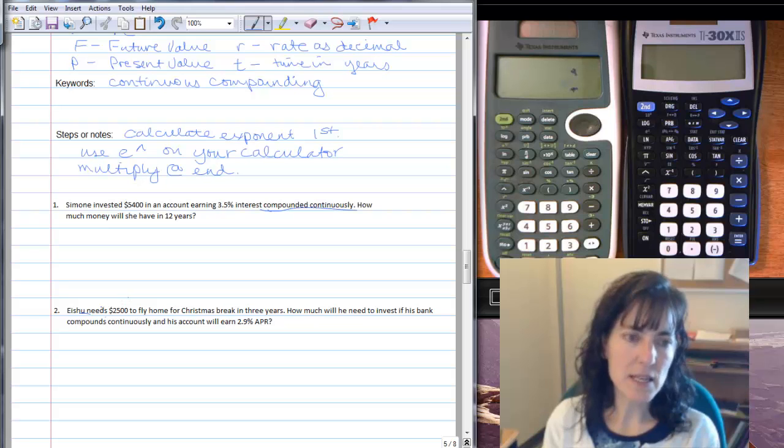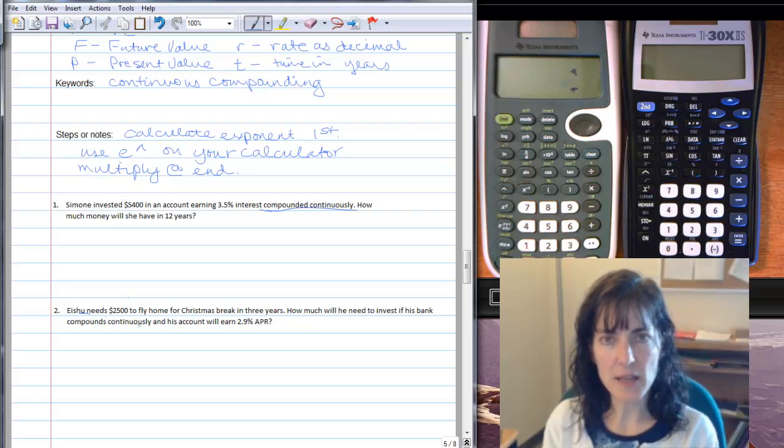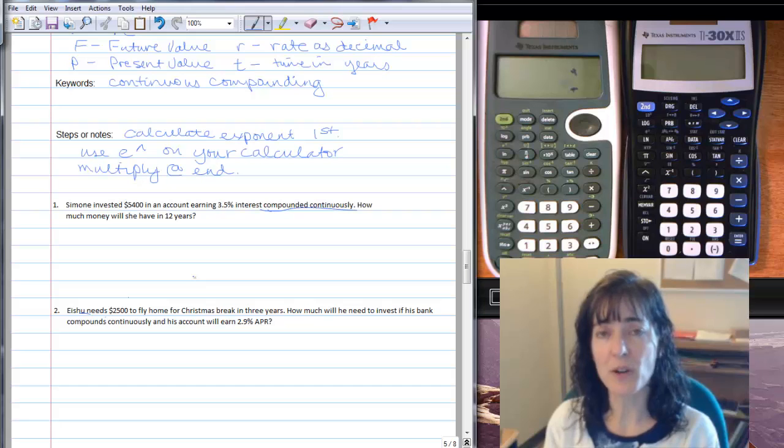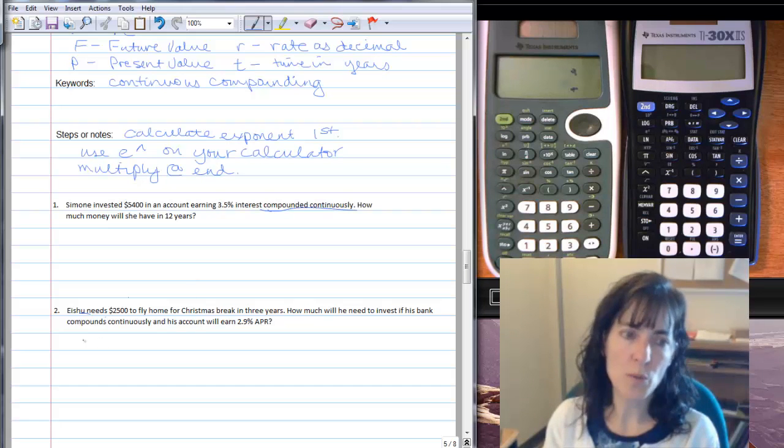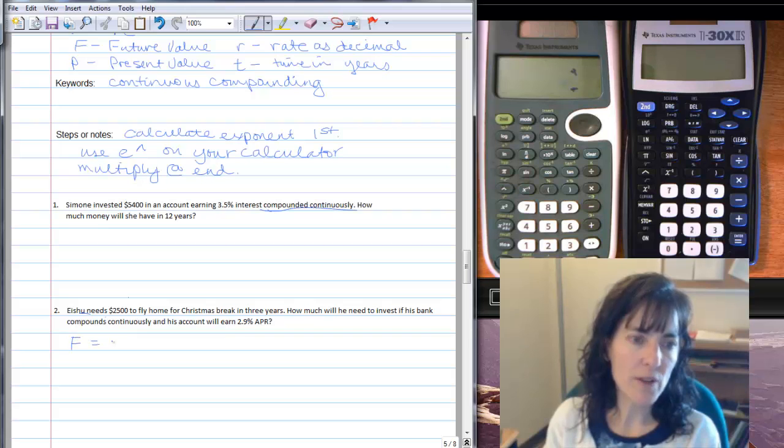Well, since this problem two is asking us to find the present value because they're giving us what Eshoo needs in the future, I'll show you that one so that you'll be able to see that direction on this problem. So first we have our future value is going to be that $2,500 that Eshoo needs to fly home.